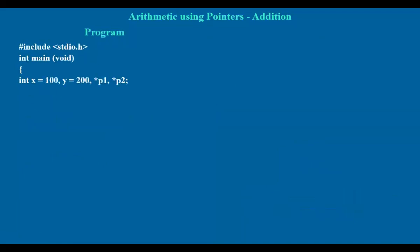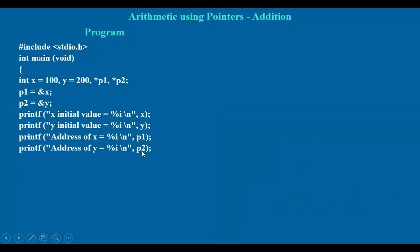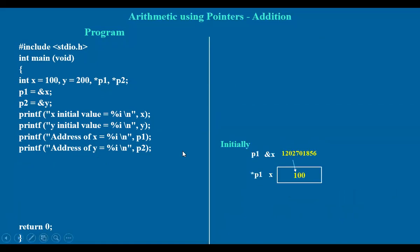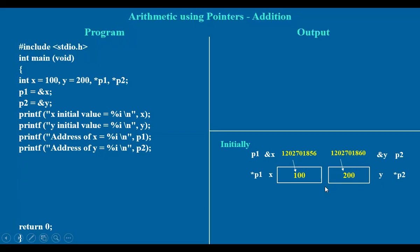Next, let us take another example. Two variables x and y are taken and two pointers are declared here, p1 and p2. Address of x is assigned to p1, address of y is assigned to p2. Now let us display x, y, p1, p2 values. Let us compile this and perform this. The values initially given are x equal to 100, and this is the address. This is the pointer. Star p1 gives the value. Similarly y also — we have 200, the value of y, which can also be referred to as star p2.